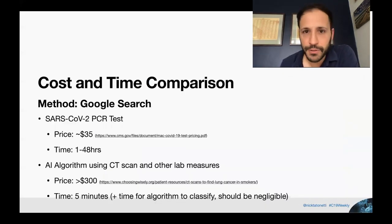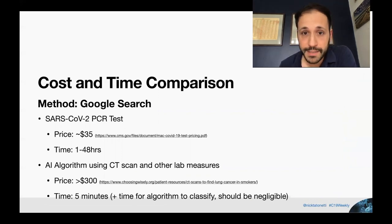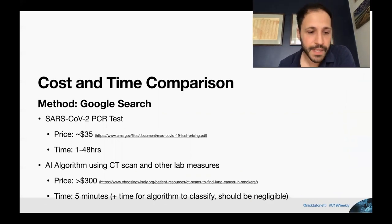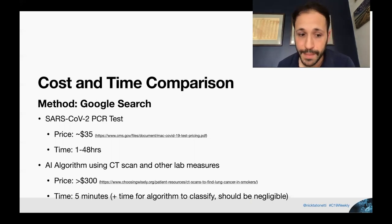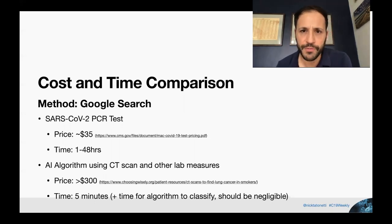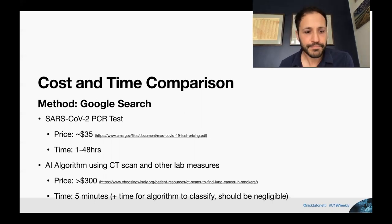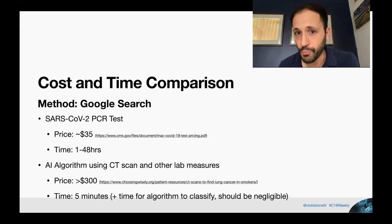I did a quick cost comparison. The PCR test is cheap — about $35 to run — and takes somewhere between an hour and 48 hours to get results. This algorithm uses a CT scan, which costs around $300 on average, so it's quite a bit more expensive. However, the time is very quick — about five minutes to run these CT scans, so you could get results back in less than 10 minutes, though it is much more expensive.